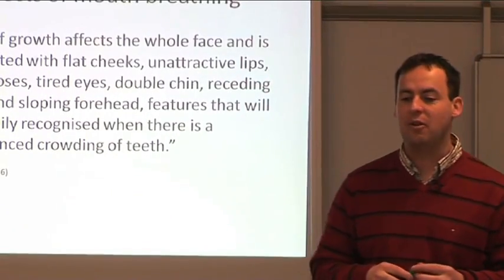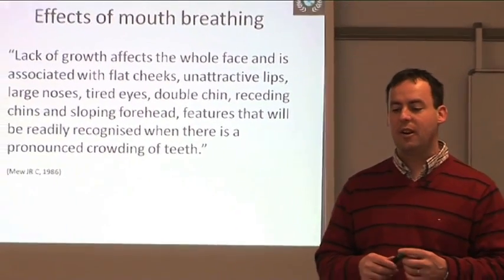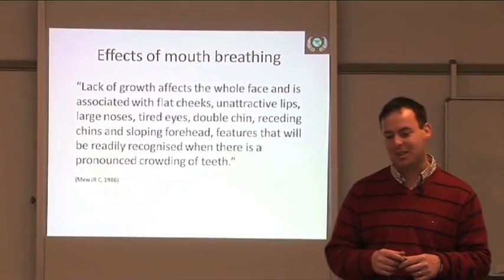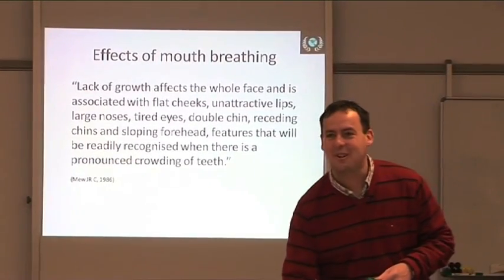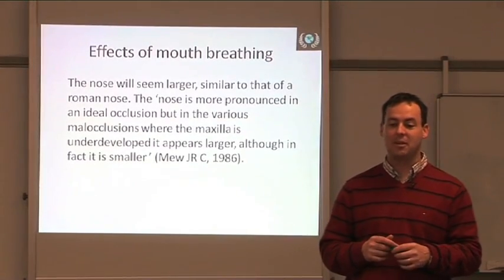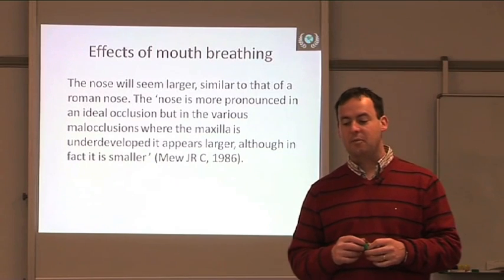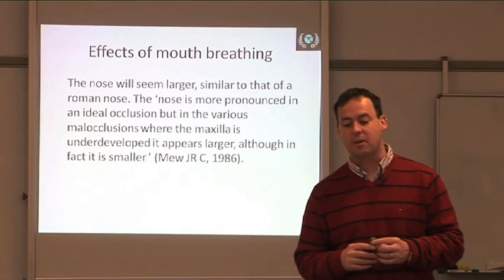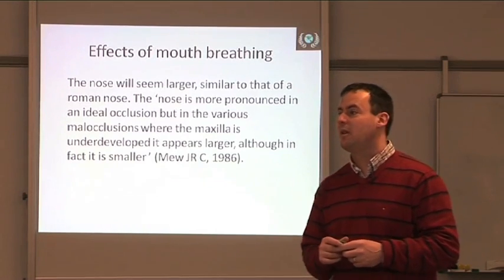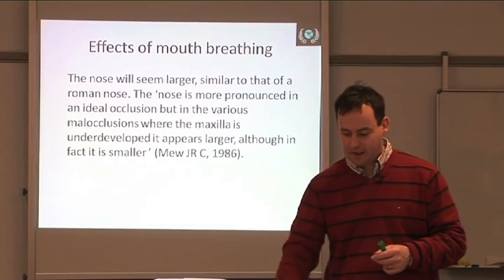Lack of growth affects the whole face and is associated with flat cheeks, unattractive lips, large noses, tired eyes, double chin, receding chin, and sloping forehead — a lot of issues associated with mouth breathing. The nose will seem larger, similar to that of a Roman nose. The nose appears more pronounced, but in various malocclusions where the maxilla is underdeveloped, it only appears larger because the jaws are set back.